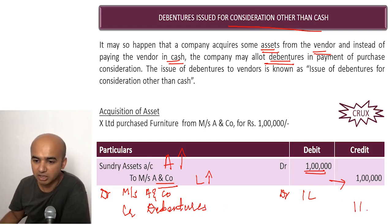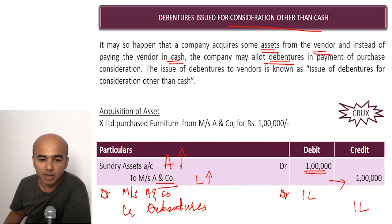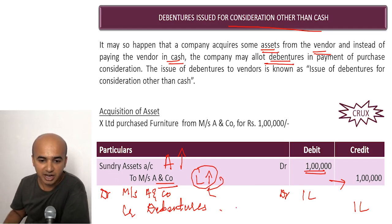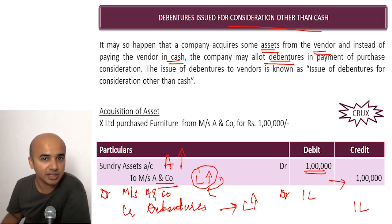So now what happened is: the liability which had increased is now getting decreased because we have allotted them debentures, and a new liability is increasing — that is debentures account.